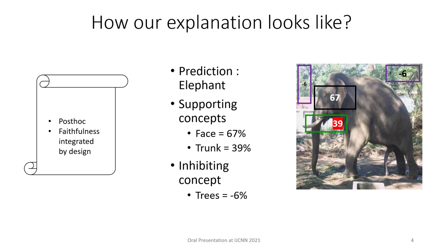Our work is a post-hoc model where we have integrated the concept of faithfulness by design. Here is a sample explanation from our framework. This test image has been predicted as an elephant. We extract the concepts integral towards the prediction and give the relevance — how relevant each extracted concept is. In this image, there are two supporting concepts: 'face' and 'trunk', as well as an inhibiting concept of 'trees'. Trees is not specific to this class and hence is inhibiting, whereas the support from 'face' and 'trunk' led to the prediction as elephant.